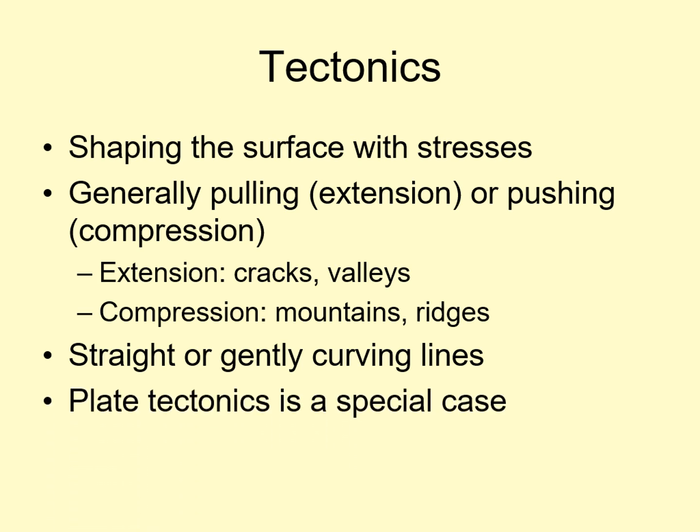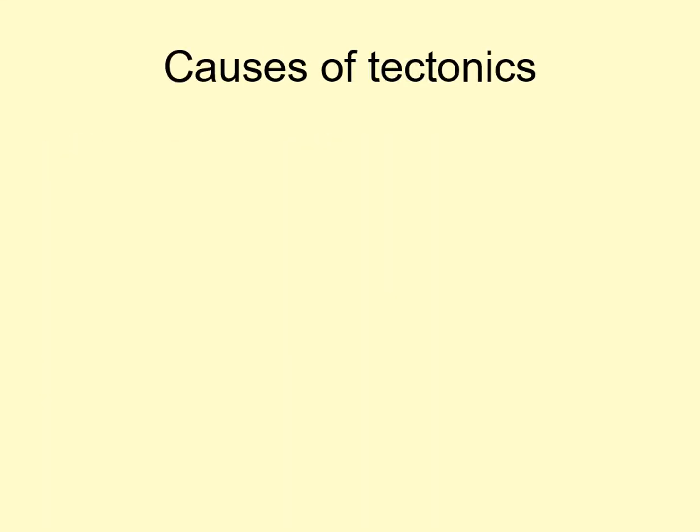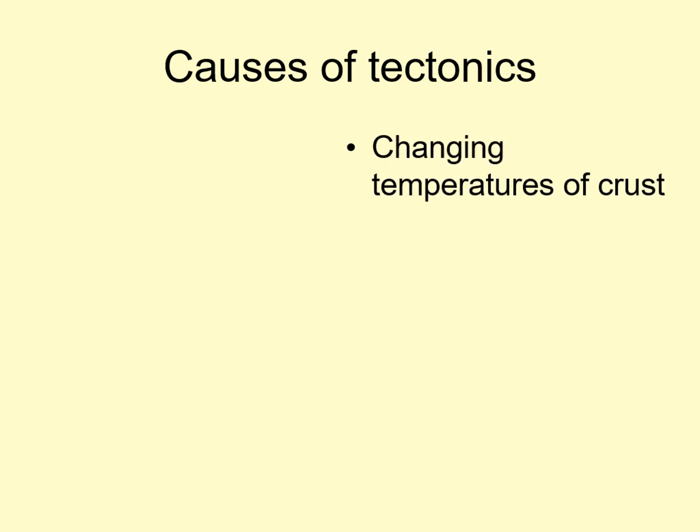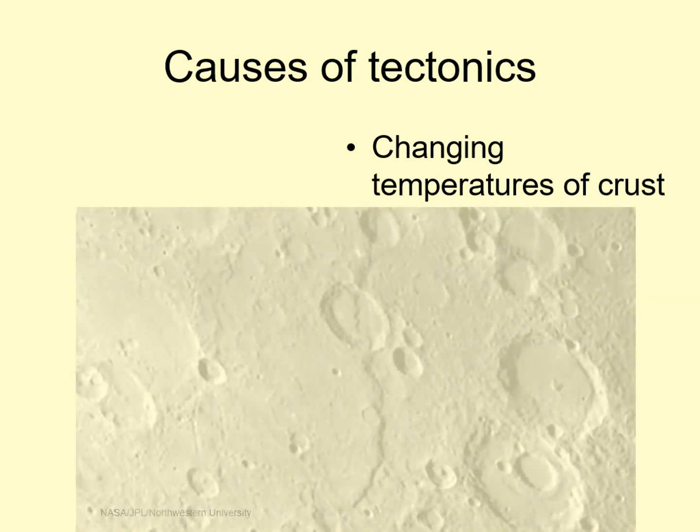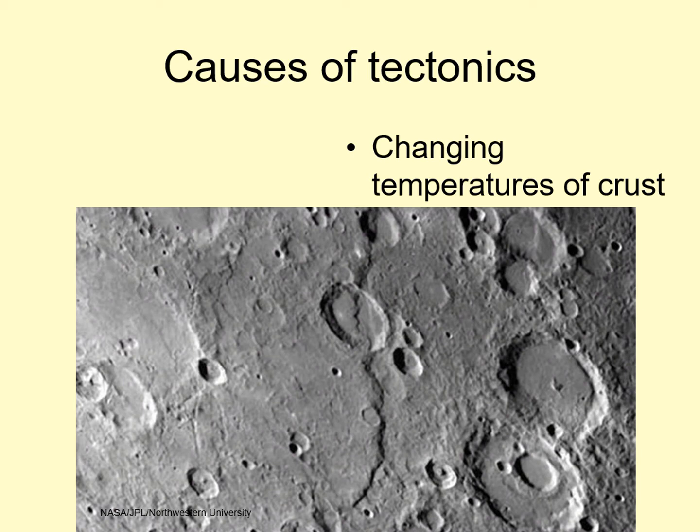Note that here on Earth, we have plate tectonics. This is a special case of tectonics that we don't see on other worlds. We'll look at plate tectonics in more detail later on, but in the meantime, don't assume that all tectonics are related to crustal plates. Like volcanism, tectonics is related to the internal heat of the planet. There are several ways that internal heat can cause stretching and squeezing of the surface. One example comes from changing crustal temperatures: as the rocks below the surface cool, they contract, causing the surface to buckle and producing ridges and scarps like this one on Mercury.